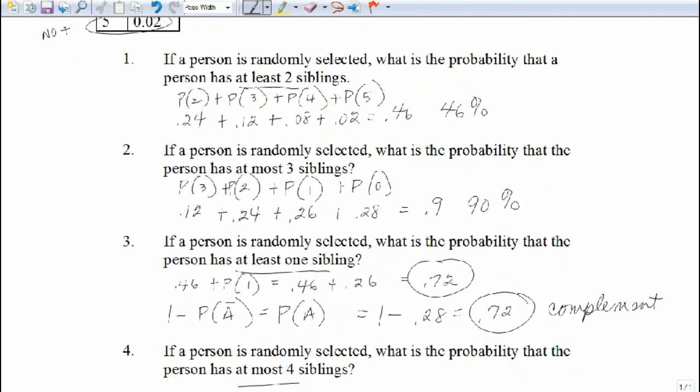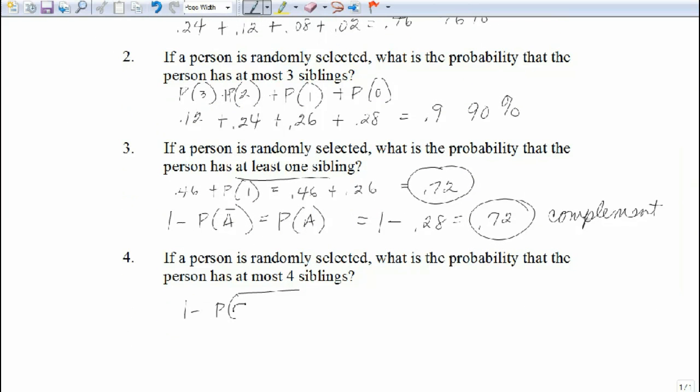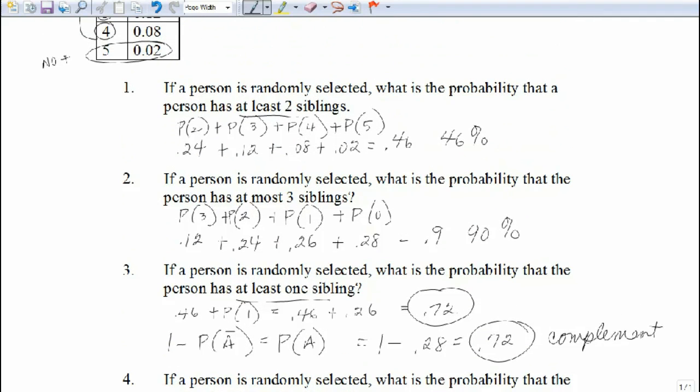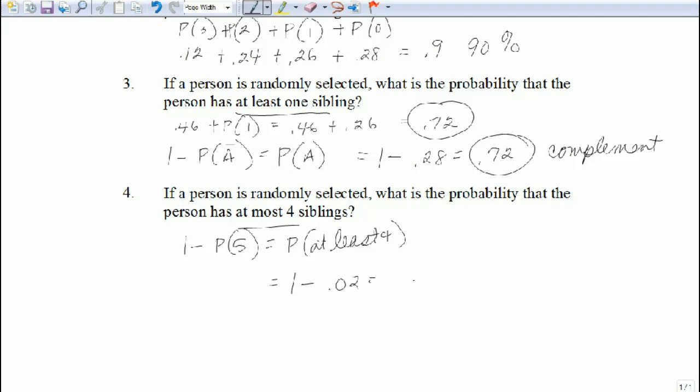So what we can do is we can say one minus getting the probability of five. What we don't want will give us the probability of at most four. Well, that's one minus, let's go back again and look, 0.02. So one minus 0.02 is 0.98. So 98% of the people have at most four siblings. And that's what we wanted. At most four. So this is the probability of five. We take it away. That gives us the probability of at most four.